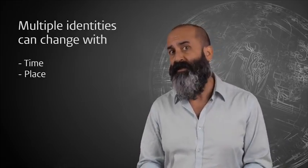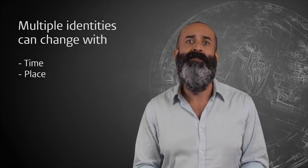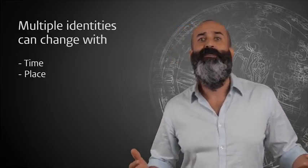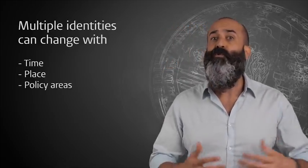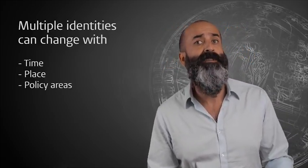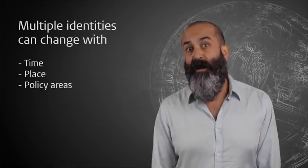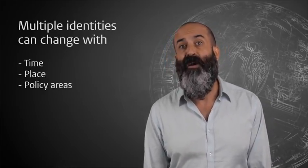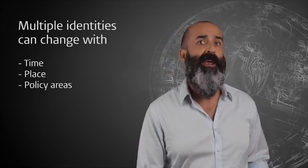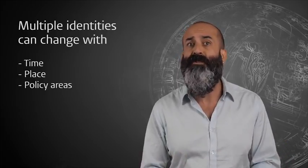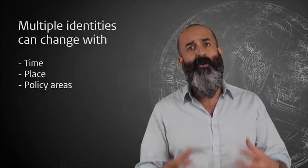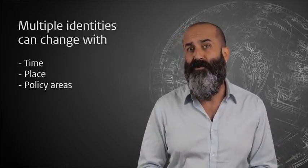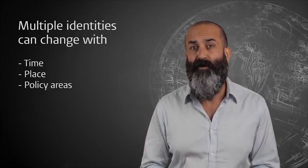But there is something else than just having multiple identities that are liable to evolve with time and place. Policy areas matter too. Different issues, priorities and loyalties guide our relationship with different levels of government. On some policy areas, particularly those that are closely related to identity issues like education and culture, we might hold strongly regionalist views expecting the regional state to be the order of government with autonomy.